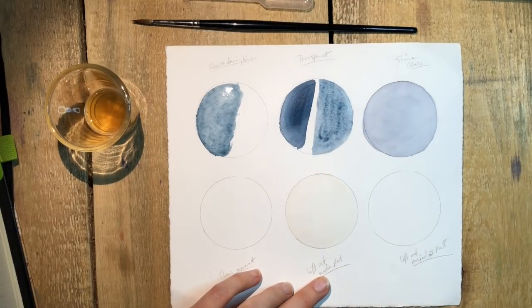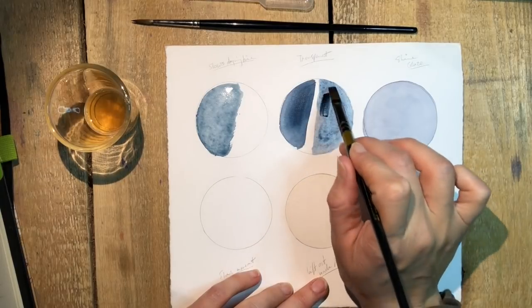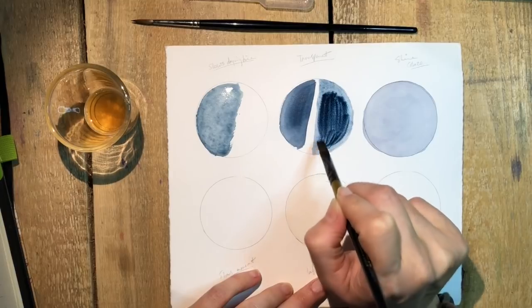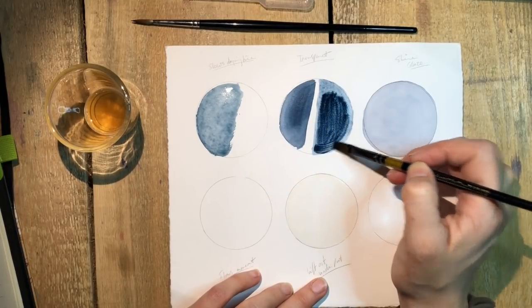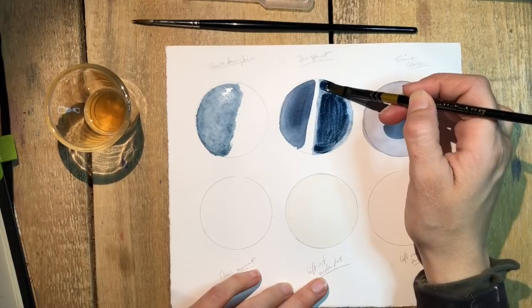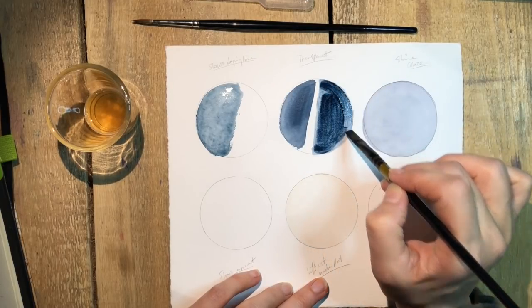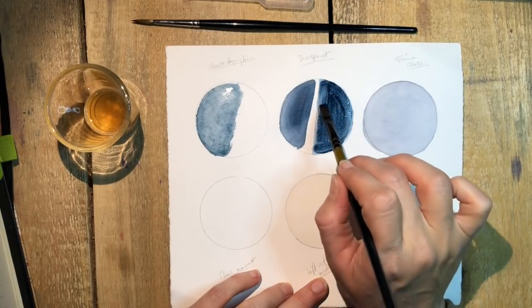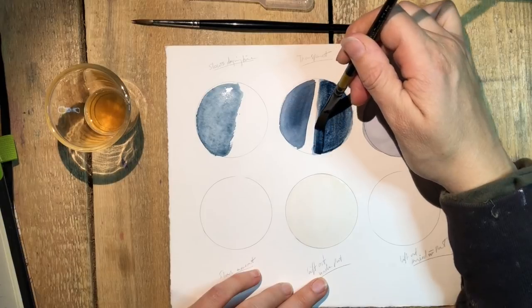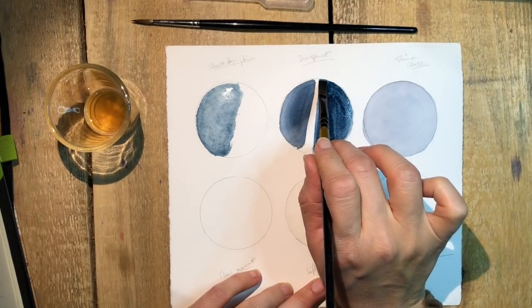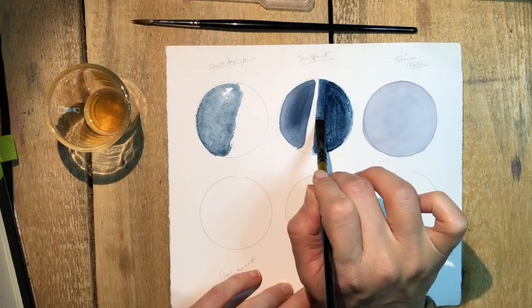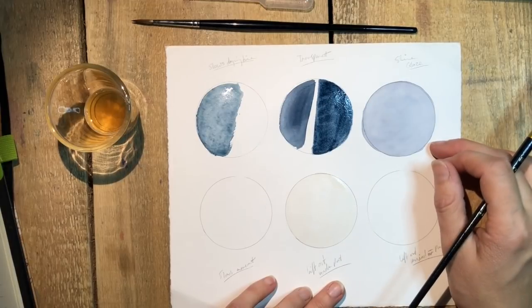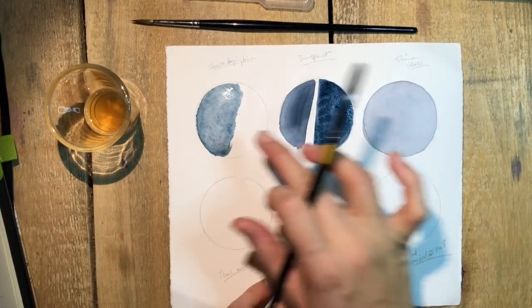Considerably more transparent. Now let's add more pigment. Let's see what happens. What do you think? So here we have the same color, same color paint, and it's already dried. And we can see this is totally different.